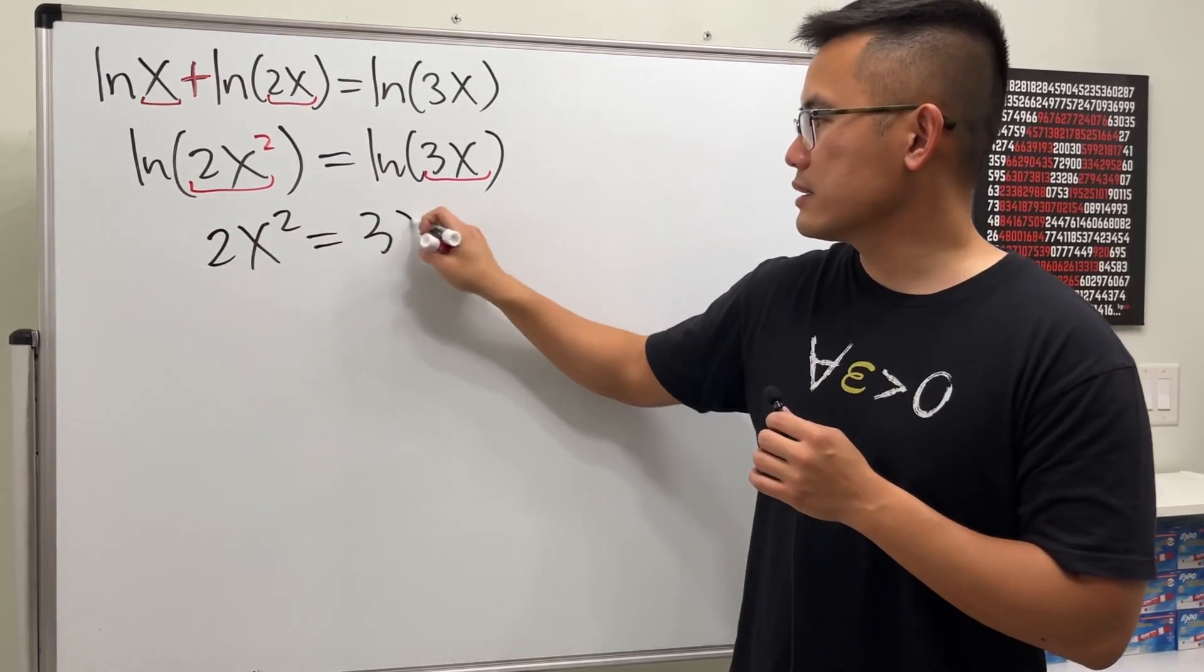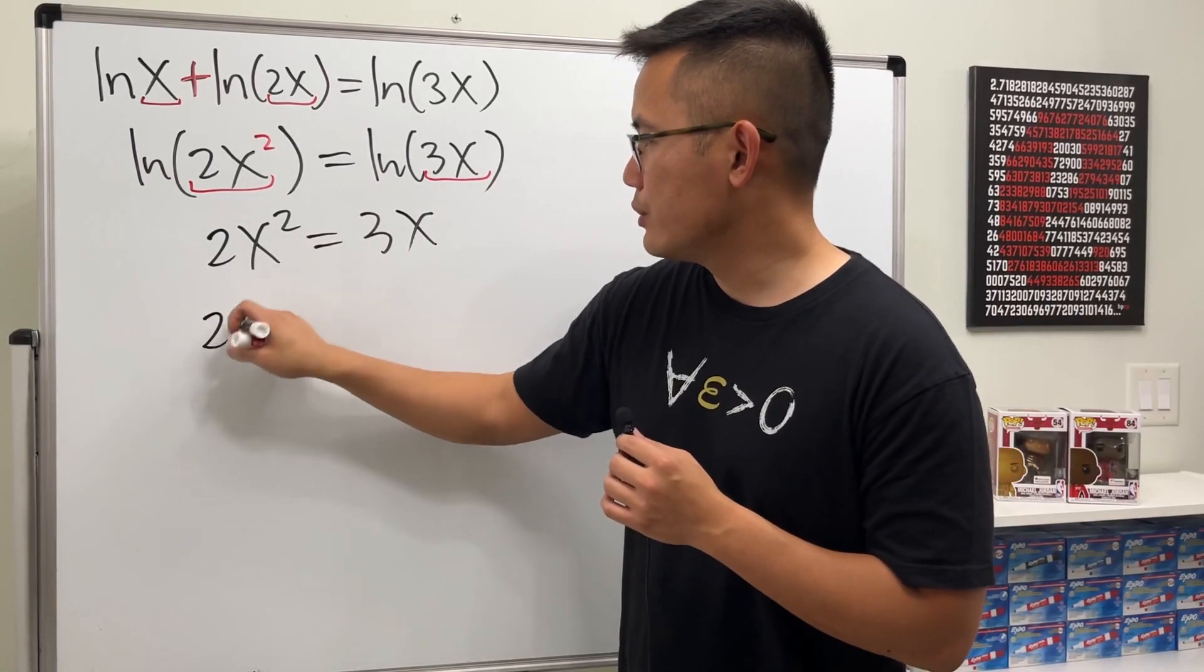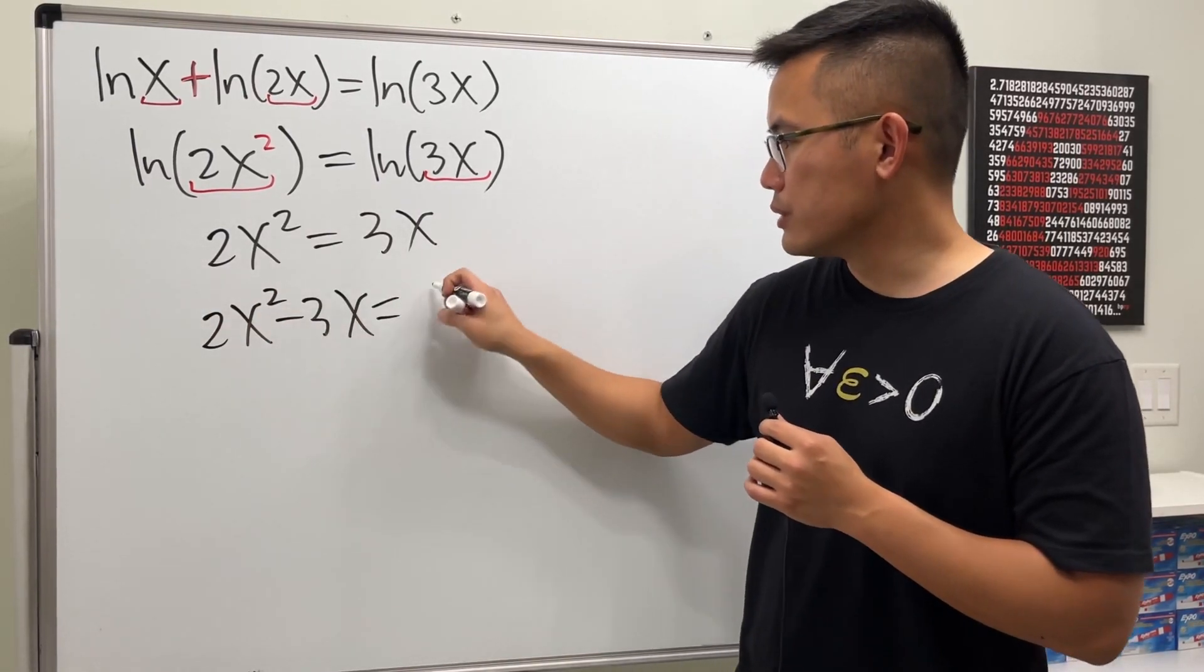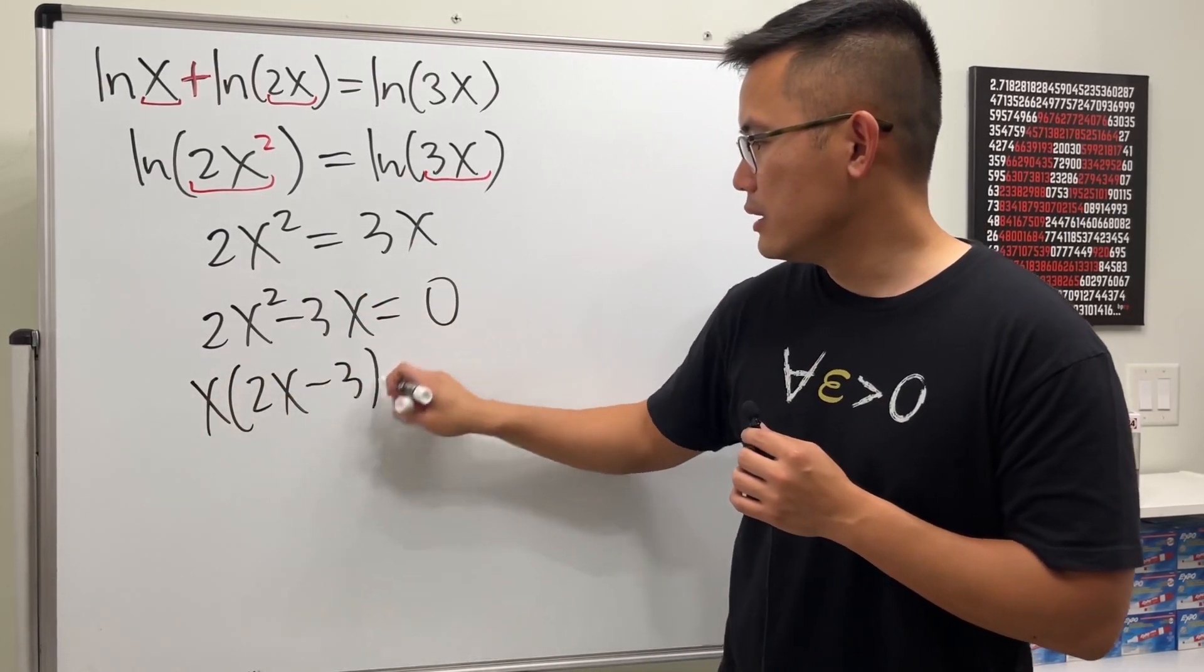2x² is equal to 3x, and now we can be happy and solve it. Move this to the other side and we have 2x² - 3x = 0. Factor out the x, and then we have x(2x - 3) = 0.